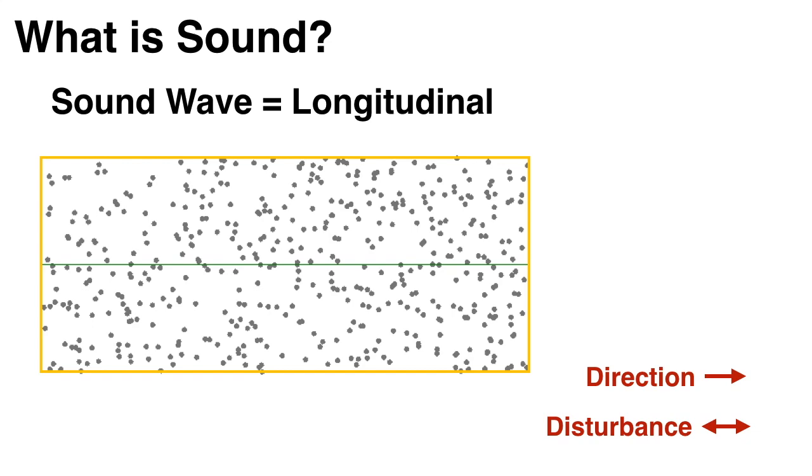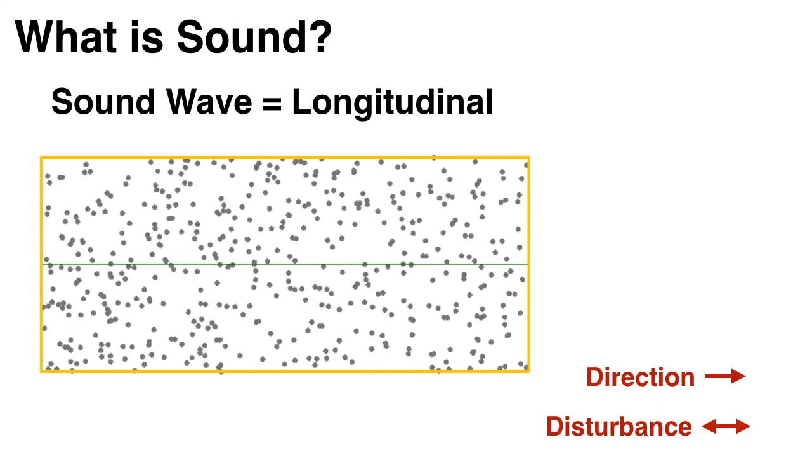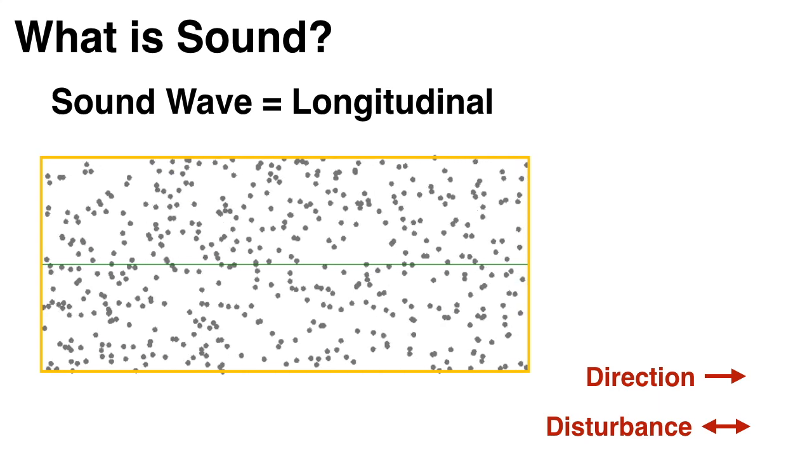Sound waves, on the other hand, are longitudinal. This means that as the wave is moving in one direction, say to the right, it's creating a disturbance in that same direction, so left to right.